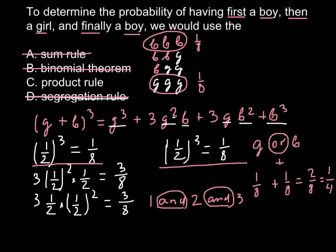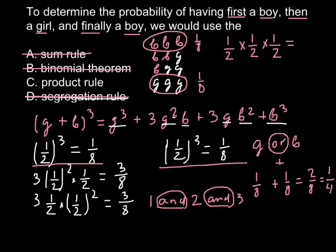We multiply the probabilities of each independent event: 1/2 chance for the first child to be a boy, times 1/2 chance for the second child to be a girl — these are independent events, the gender of the first child does not affect the gender of the second — times 1/2 for the third child to be a boy. Multiplying all independent probabilities: 1/2 × 1/2 × 1/2 = 1/8. This is our correct answer.